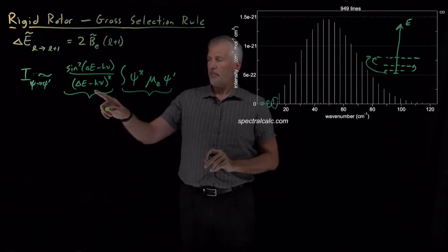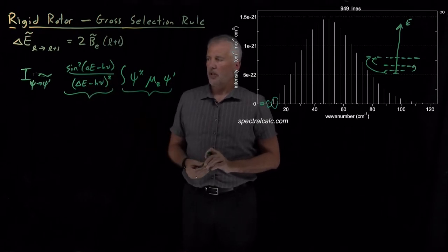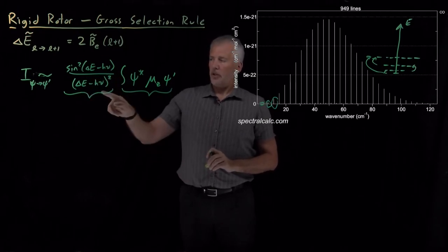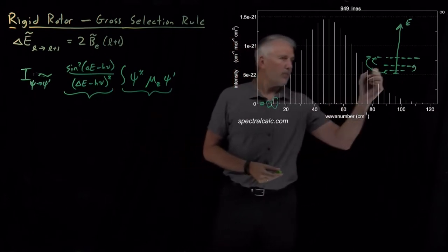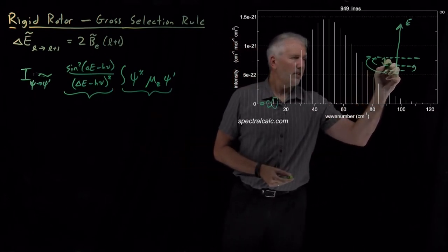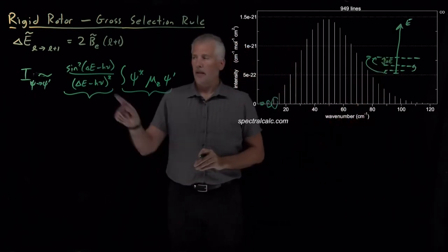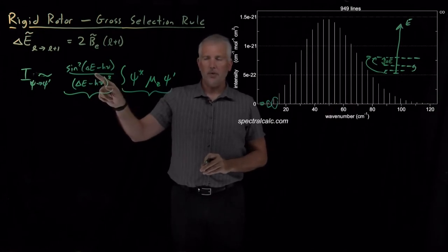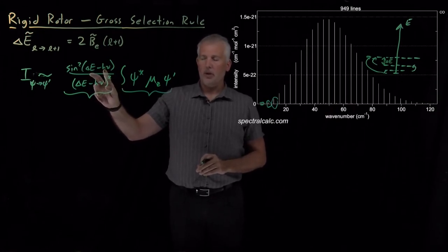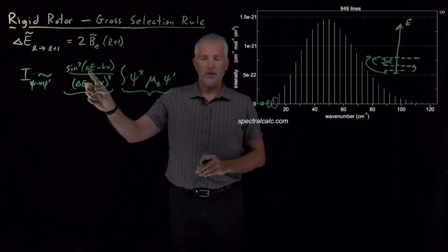This first term, we'll talk about only in order to say, this term tells us that if there's a particular delta E between two of these states, then this term guarantees that the frequency of light absorbed will be equal to, or very close to, that difference in energy.